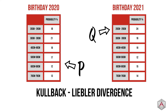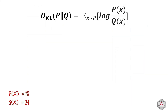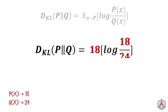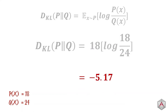Now it's time to calculate the KL divergence of each range boundary, starting with the boundary 20cm to 29cm. For this boundary, our value P(x) is 18 and Q(x) is 24. Let's refer back to the equation of KL divergence. Once we plug in our values for P(x) and Q(x), we can calculate our KL value for this individual boundary. This gives us minus 5.17.